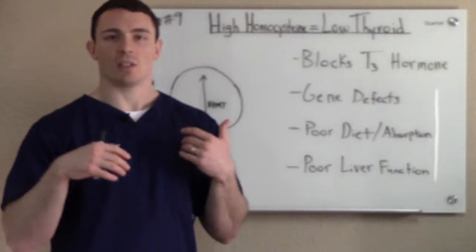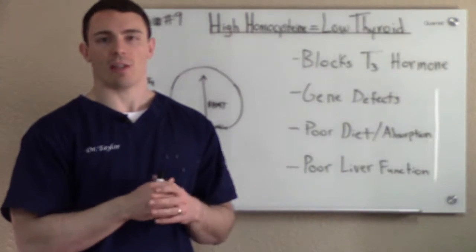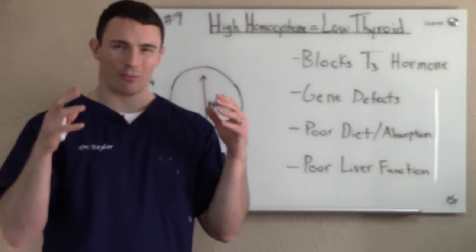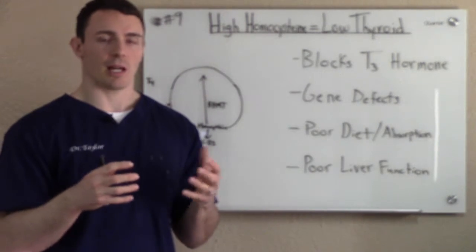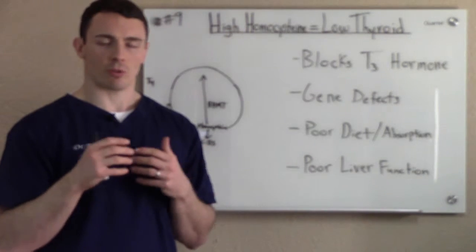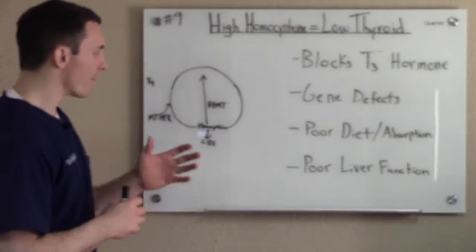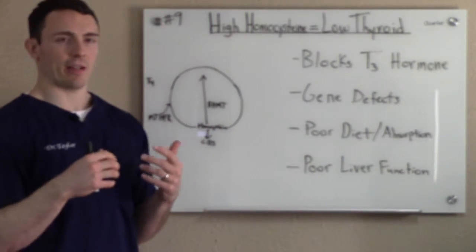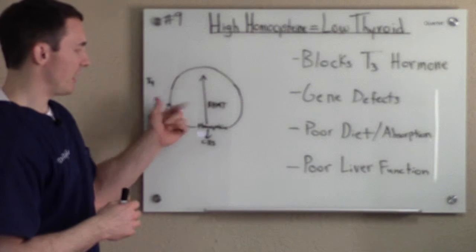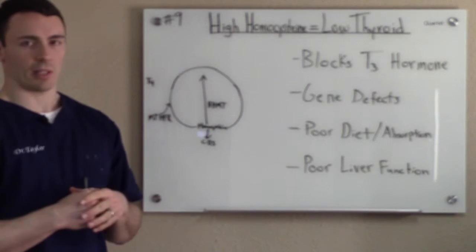Another issue with homocysteine involves gene defects. This is why we do genetic testing in our office — to see specifically where the genes are having issues so you can be supported properly. We're going to look at a few genes through the methylation cycle. This is a super truncated version of part of the methylation cycle. You have the MTHFR gene here, BHMT gene here, CBS gene right through there, and homocysteine right through there in the cycle.